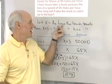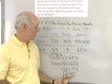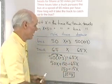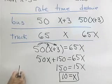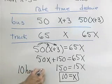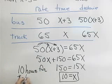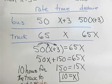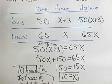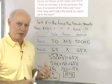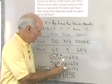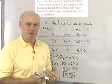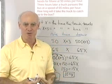So x equals 10. Up here I said let x equal the time that the truck travels, so x equals 10 stands for 10 hours — the amount of time it takes for the truck to overtake the bus. I want to write out the answer in sentence form so that x equals 10 means something in the original words of the problem. In this case, x equals 10 means it takes 10 hours for the truck to overtake the bus.